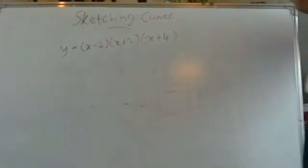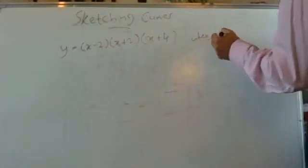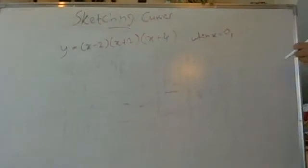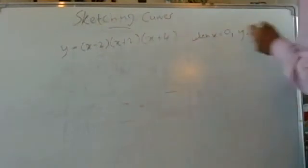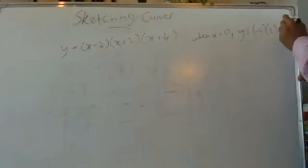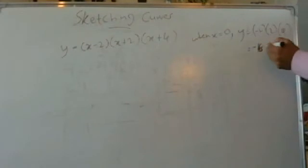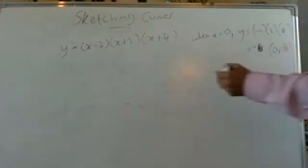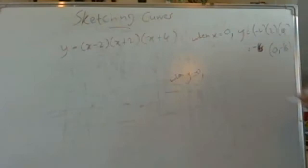First, put x equal to 0. When x equals 0, y equals minus 2 times plus 2 times plus 4. That's minus 2 times 2 is minus 4, times 4 is minus 16. So the graph crosses the y-axis at (0, minus 16).